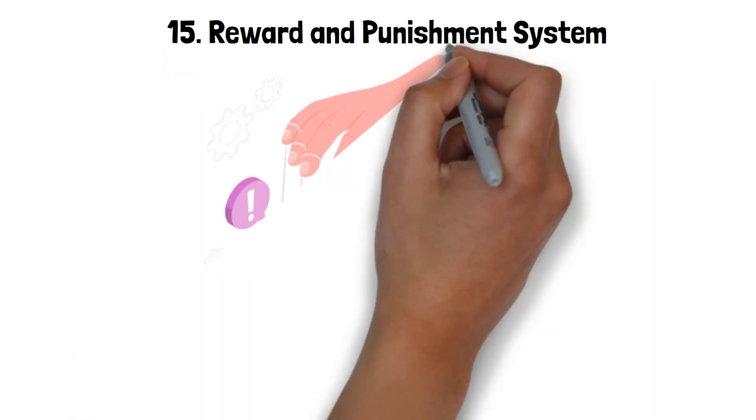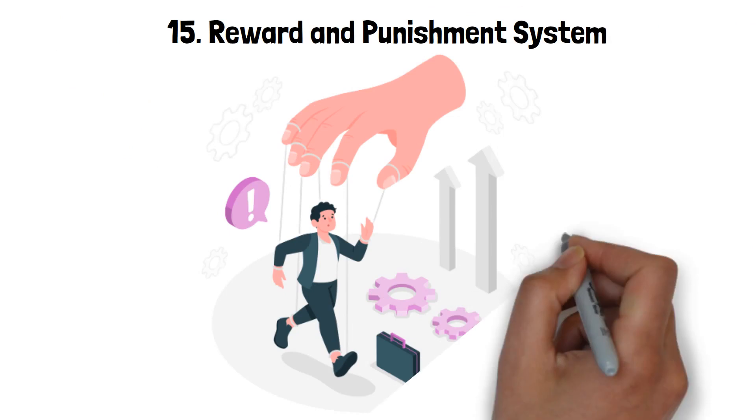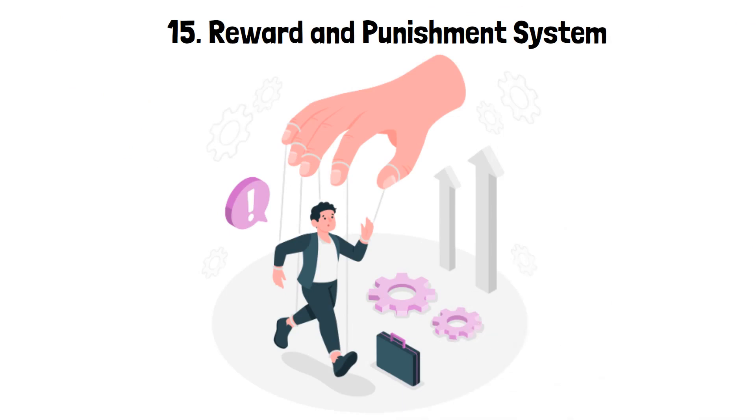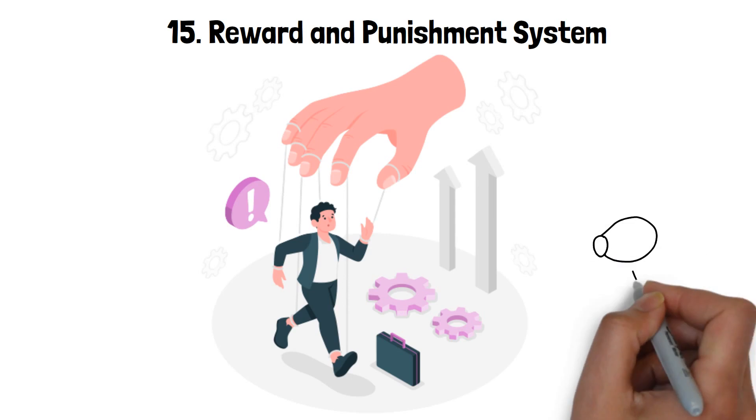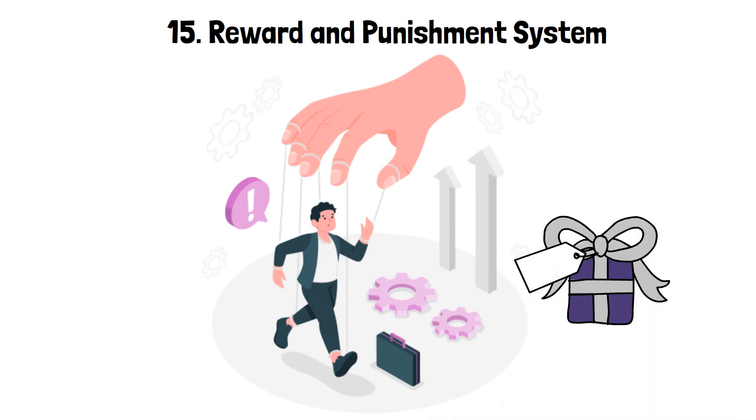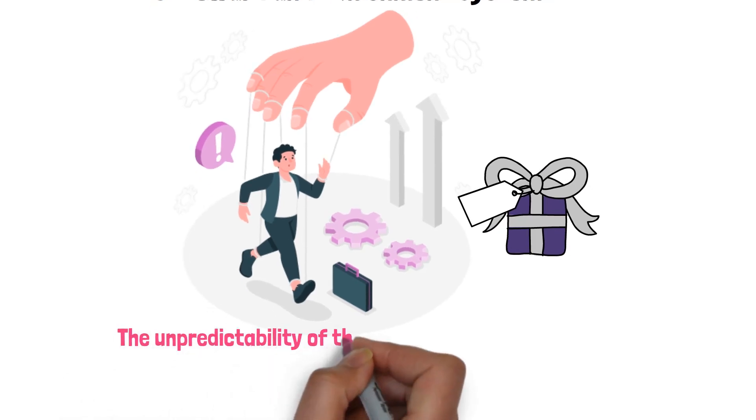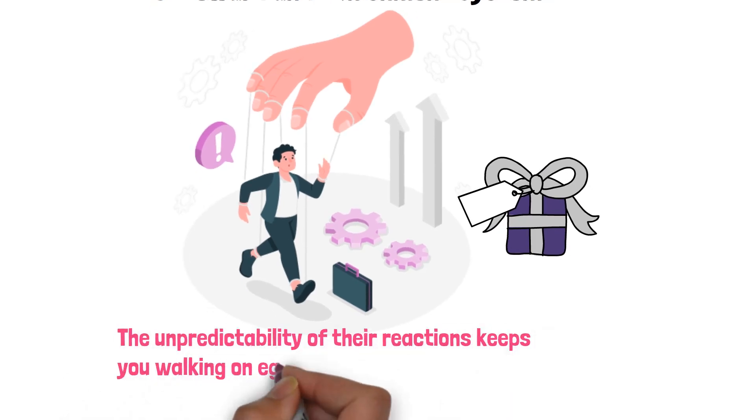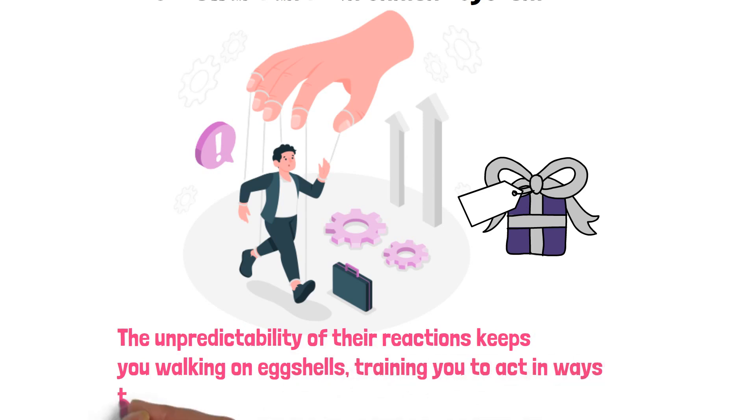15. Reward and punishment system. Like training a pet, the manipulator might employ a system of rewards and punishments. When you behave as they want, they'll shower you with affection or gifts, but step out of line and they'll withdraw, criticize, or even rage. The unpredictability of their reactions keeps you walking on eggshells, training you to act in ways that please them, simply to avoid their bad side.